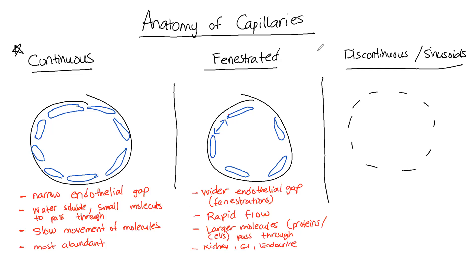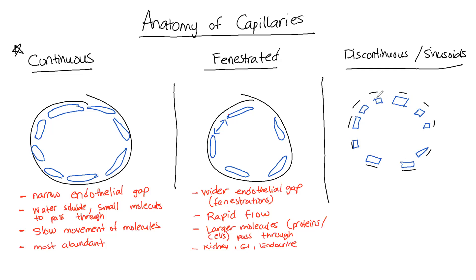The final type, discontinuous capillaries — even more rare — have a disconnected or discontinuous basement membrane, as the name implies. There are actual openings in the basement membrane, which allows for even more flow of even larger molecules. Large openings exist not just between the endothelial cells but also in the basement membrane, so there's absolutely no impediment to what can pass through. This is a discontinuous or sinusoidal capillary, and the transfer here is more rapid and more free-flowing.